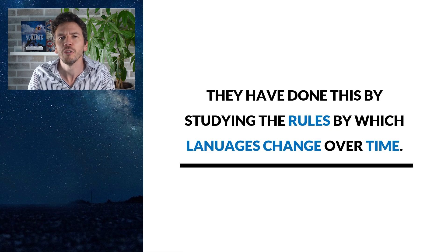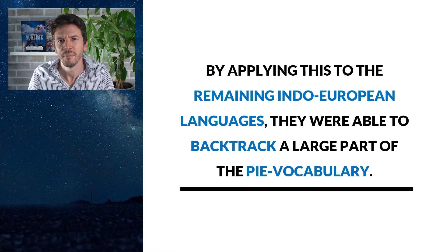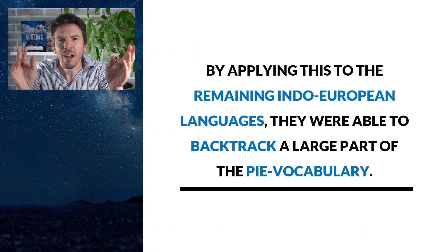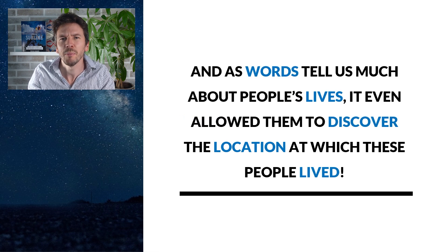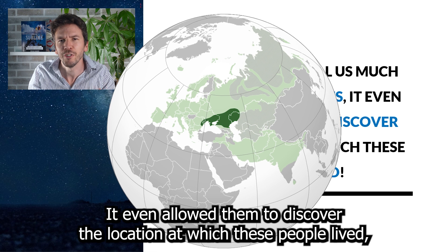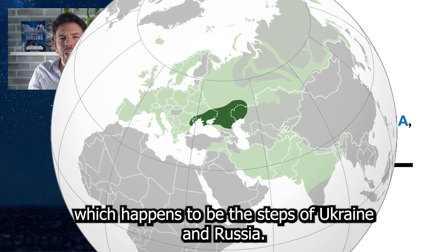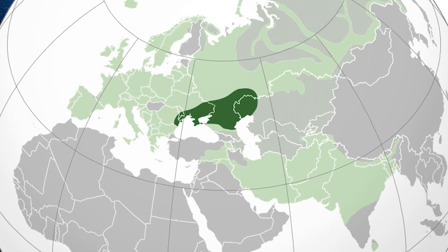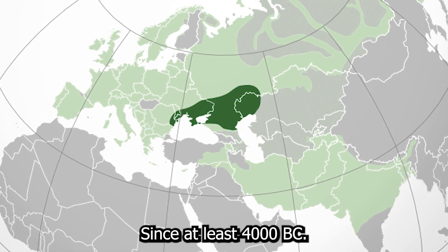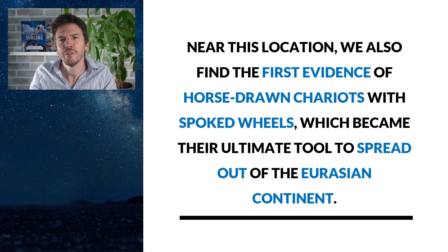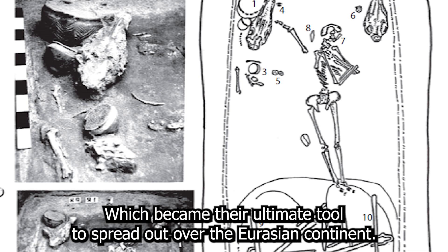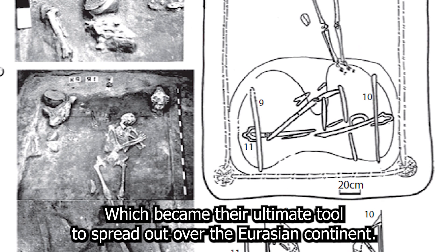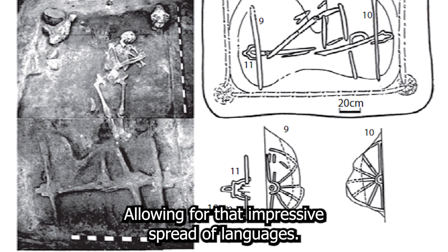They have done this by studying the rules by which languages change over time. By applying these rules to the remaining Indo-European languages, they were able to backtrack a large part of the PIE vocabulary. And as words tell us much about people's lives, it even allowed them to discover the location at which these people lived, which happens to be the steppes of Ukraine and Russia, since at least 4000 BC. Near this location, we've also found the first evidence of horse-drawn chariots with spoked wheels, which became their ultimate tool to spread out over the Eurasian continent, allowing for that impressive spread of languages.